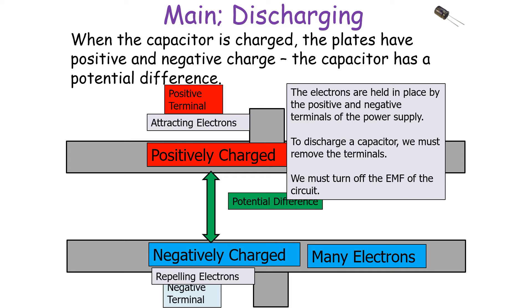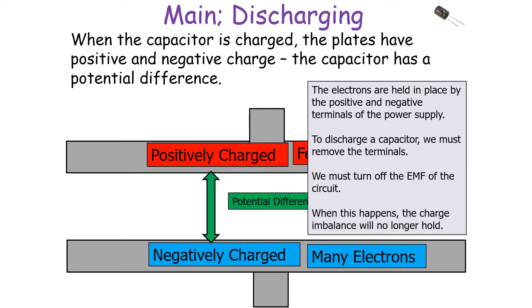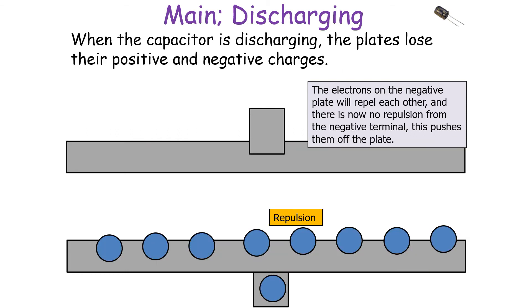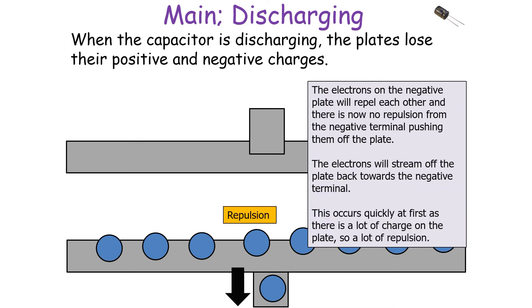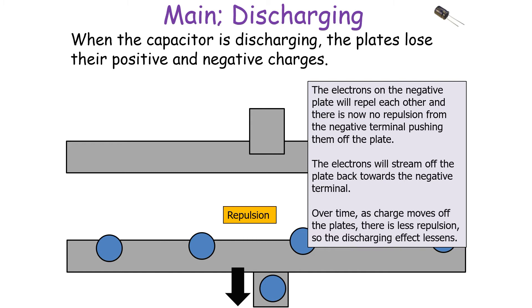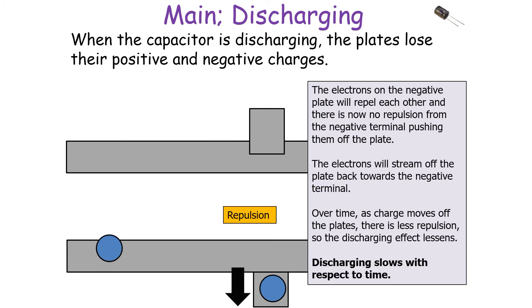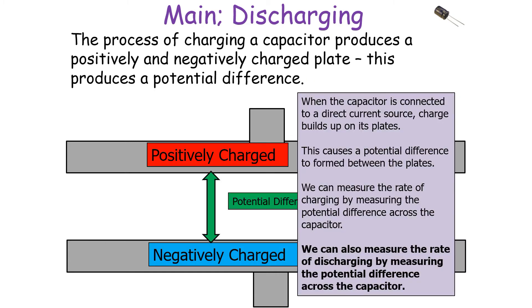To start to discharge a capacitor we must turn off the EMF of the circuit. When this happens the charge imbalance will no longer hold — the electrons on the negative plate repel each other, and with no repulsion from the negative terminal, they are pushed off the plate. The electrons stream back off the plate towards the negative terminal. This occurs quickly at first as there's a lot of charge on the plate, but over time as charge moves off the plate there's less repulsion, so the discharge effect lessens and discharging slows with respect to time.